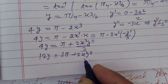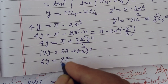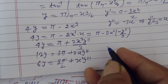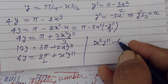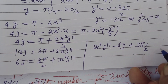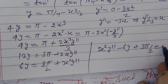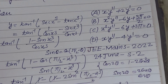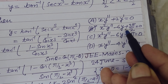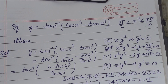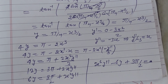Dividing both sides by 2: 6y equals 3π/2 plus x²·y''. Rearranging: x²·y'' minus 6y plus 3π/2 equals 0. This matches option B of the question: x²y'' minus 6y plus 3π/2 equals 0. So option B is correct. I hope you got it — please like the video, subscribe to the channel, thanks for watching.